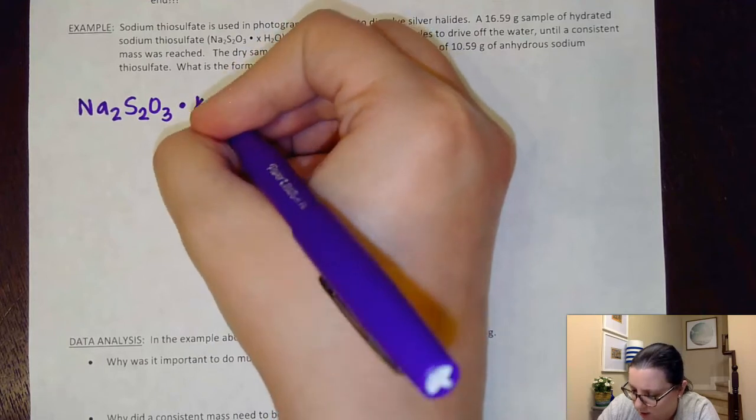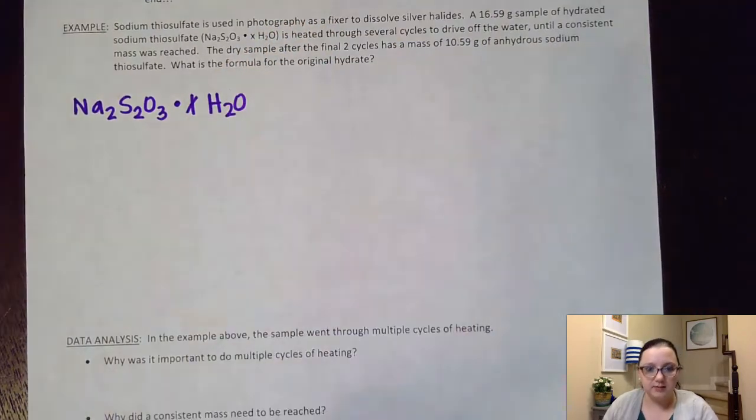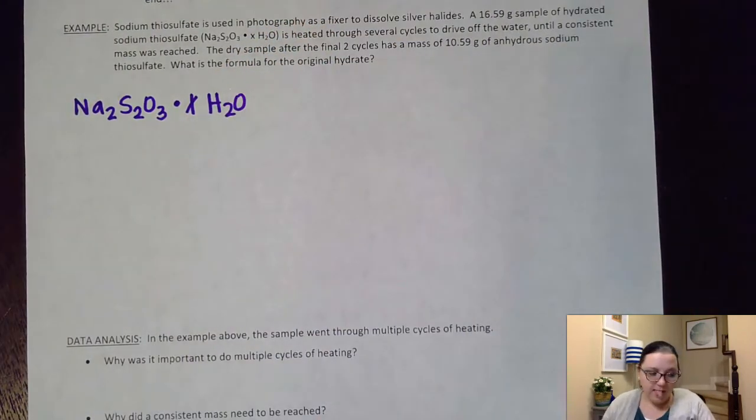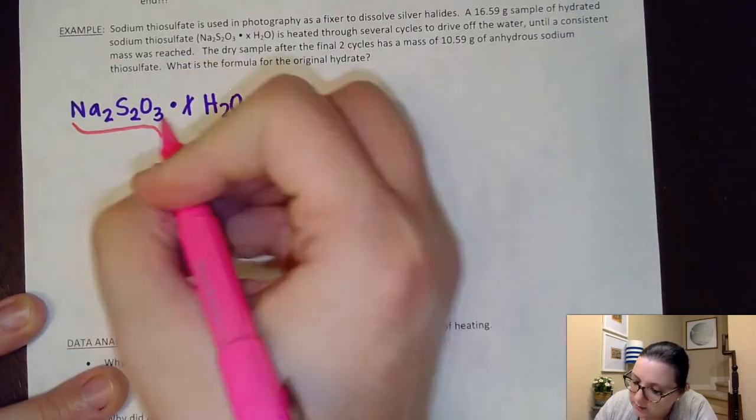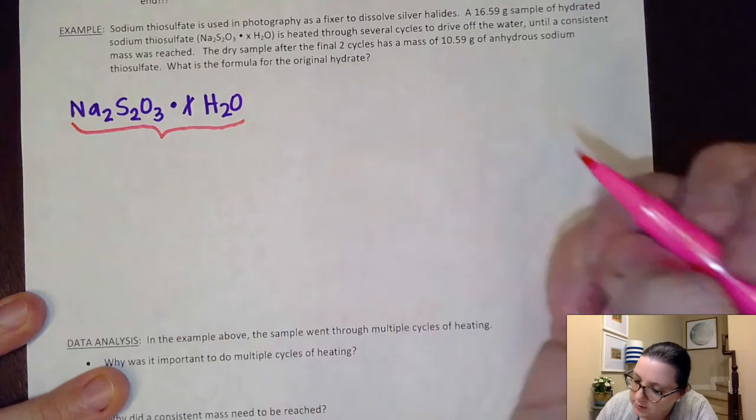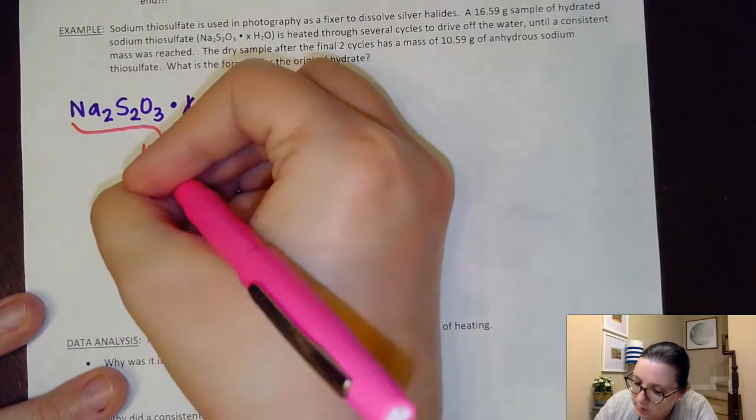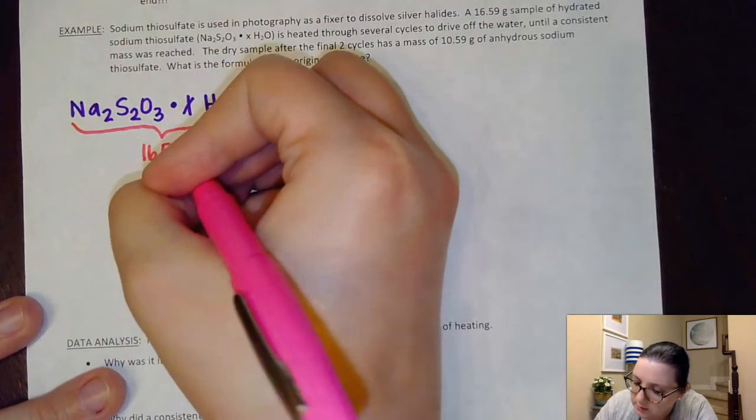So I have Na2S2O3 with some amount of waters present. So I'm going to put X number of waters, and figuring out what that X is is going to be our goal. And they have told us that of this whole compound, I'm starting off with 16.59 grams.